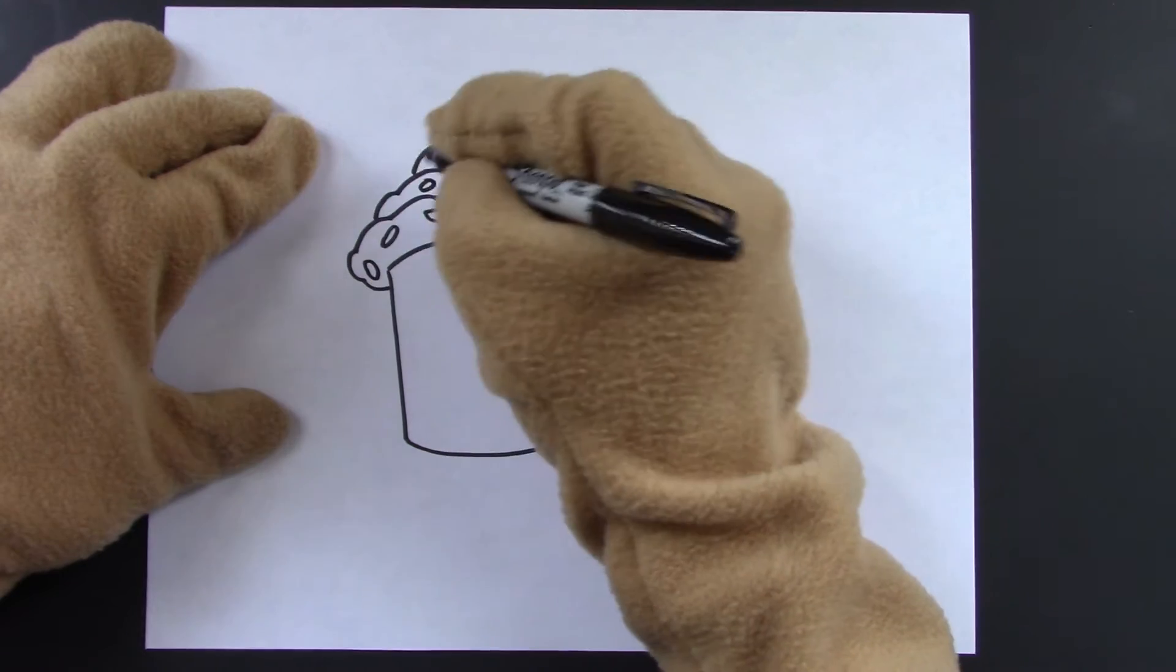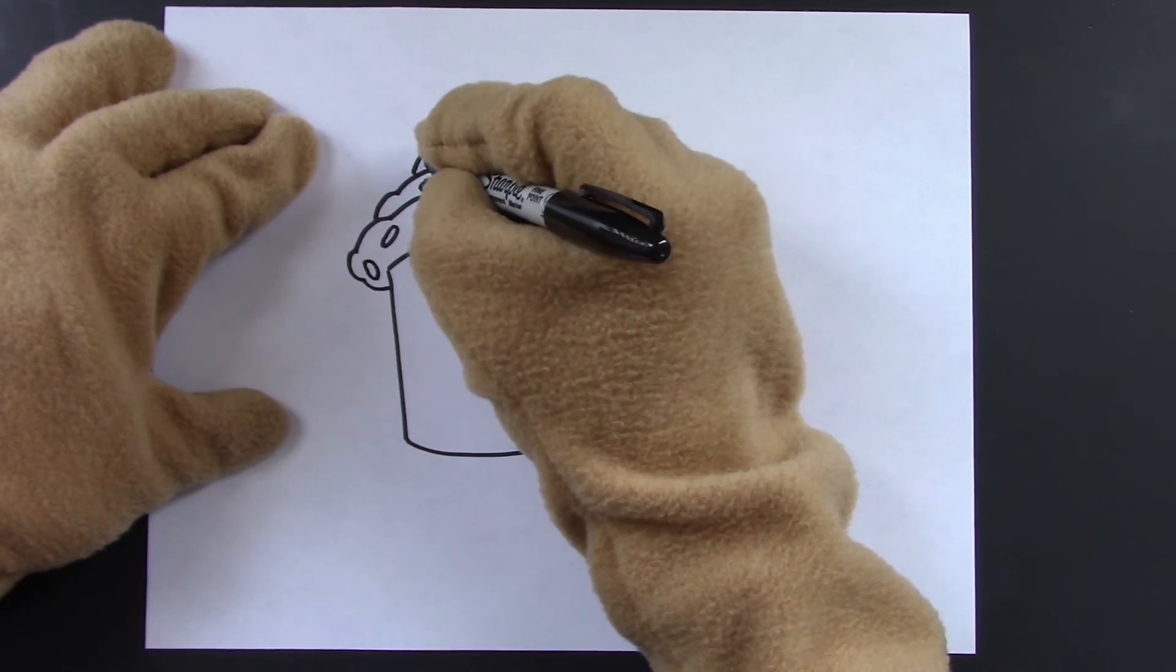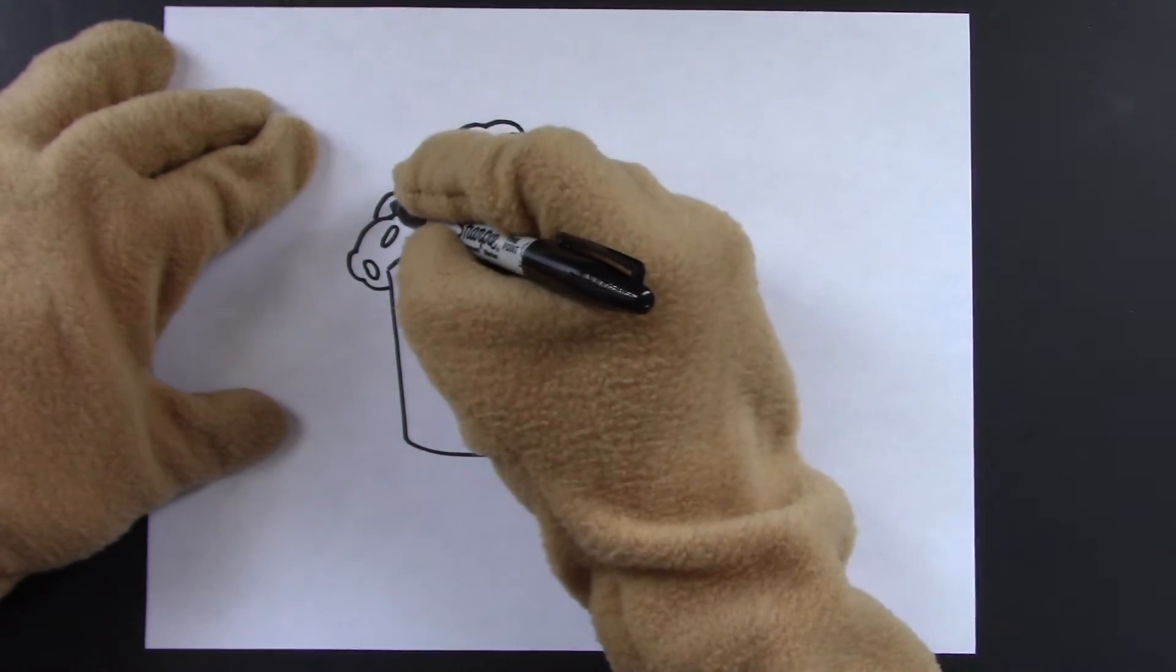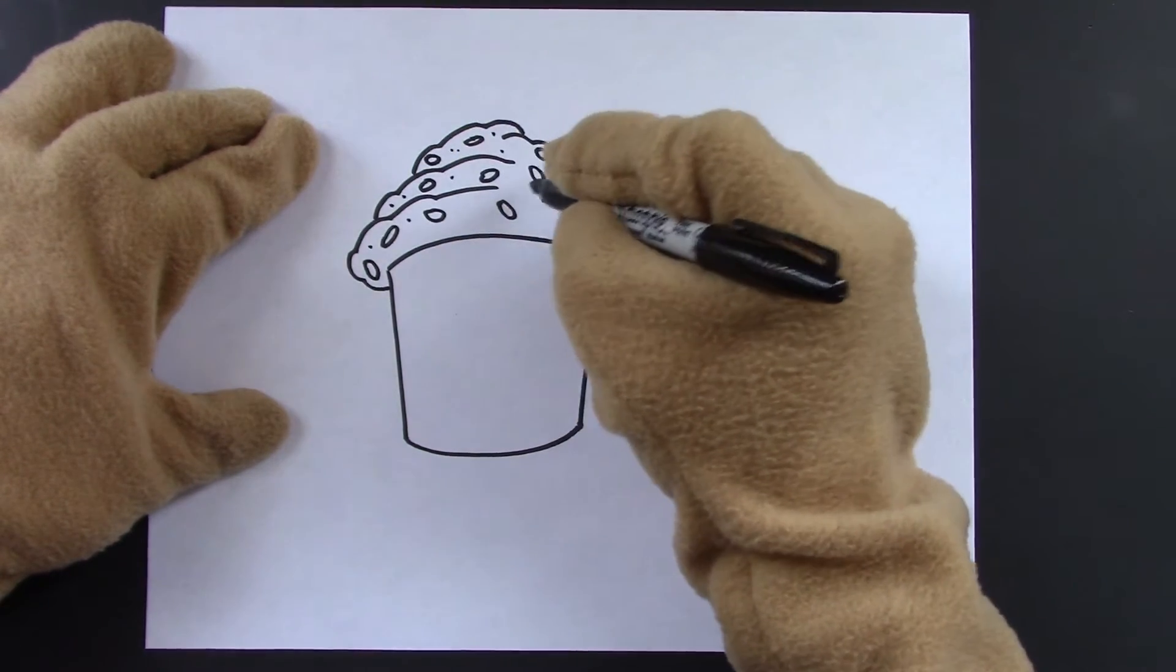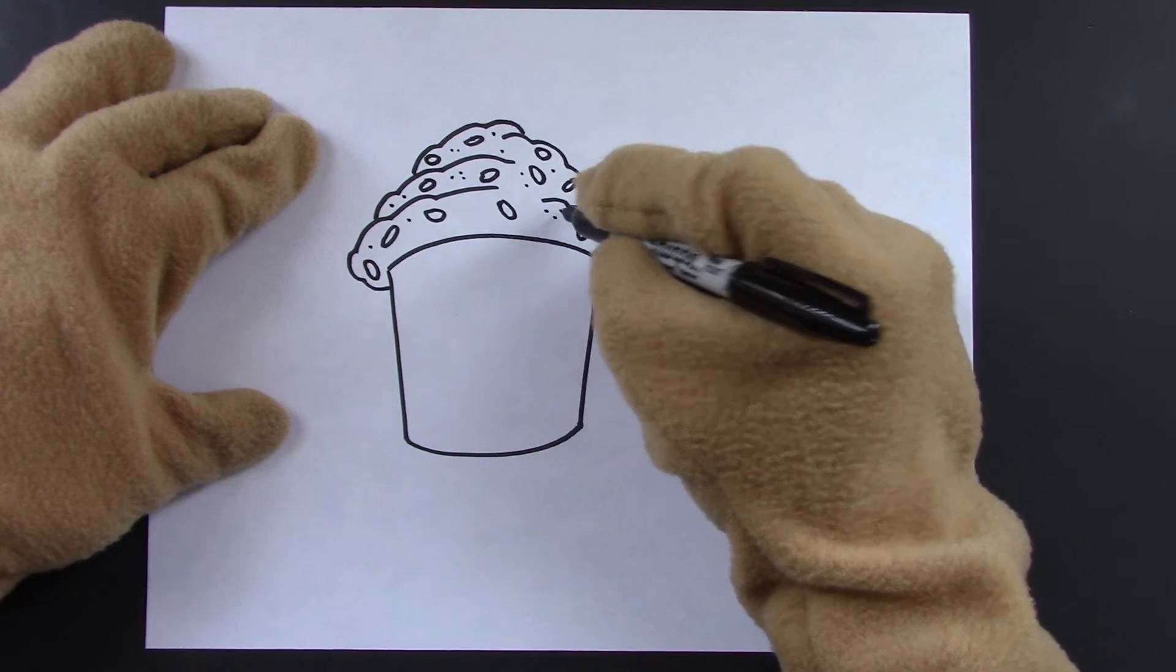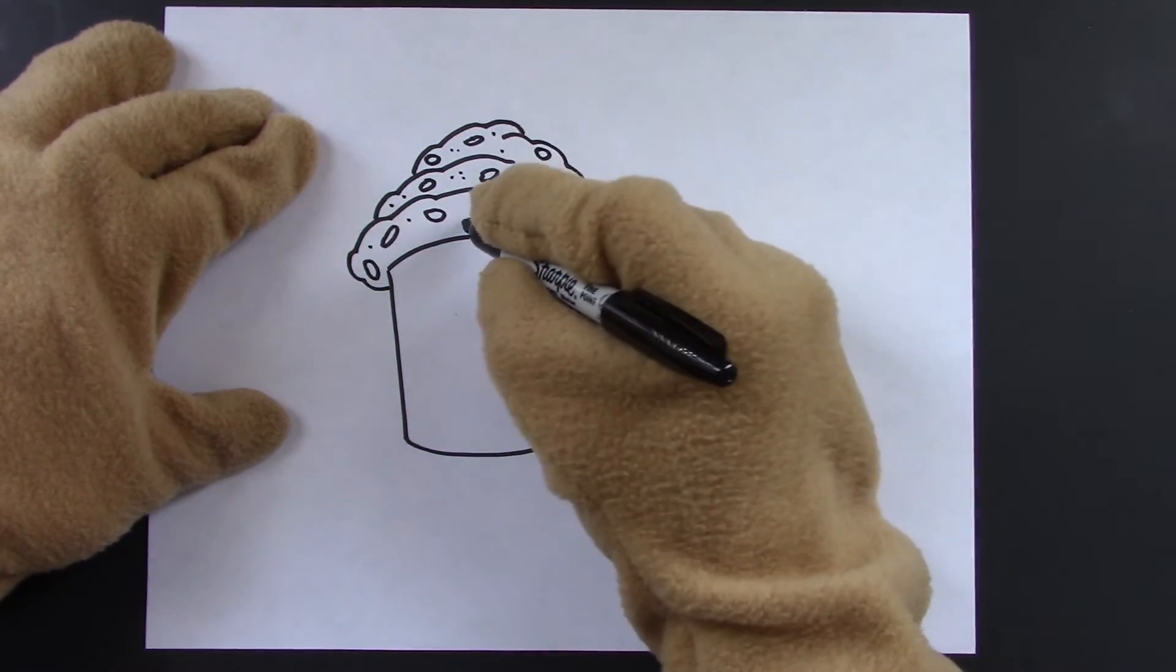Now we'll add in little dots that looks like little colored sprinkles of sugar. Just pepper them all around. There we go. Just looking nice.